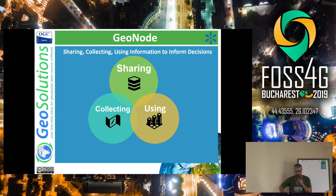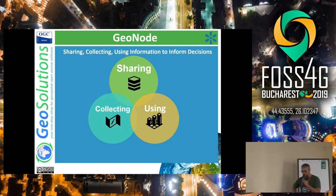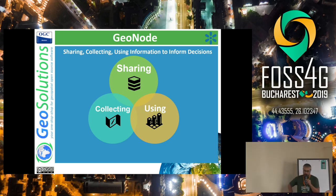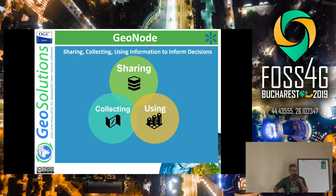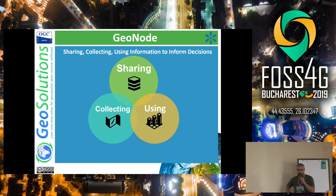Probably most of you know already what GeoNode is. I'm just quickly trying to explain what it is for and what it can be used for. GeoNode is a web framework basically based on Django, as we have seen before. It can be used for sharing — you can use GeoNode to share your data with other people. It can be used to collect data, as we have seen with the previous use case, and we have a lot of use cases. Since it is based on Django, which is a Python framework, it is really extensible.